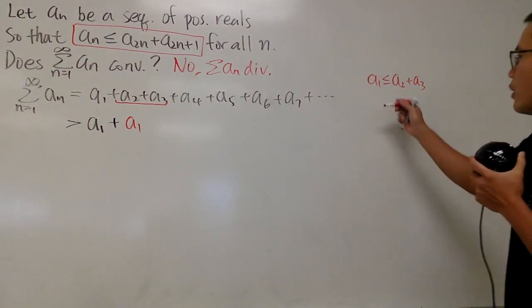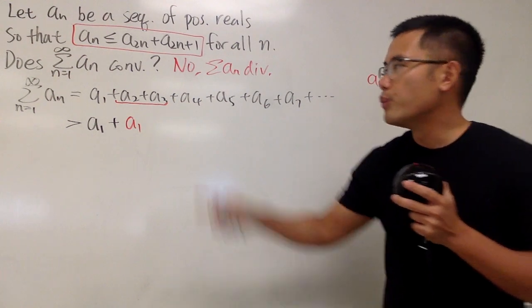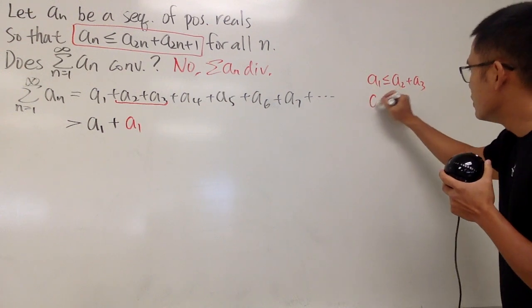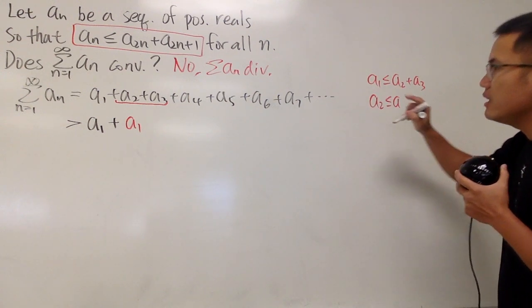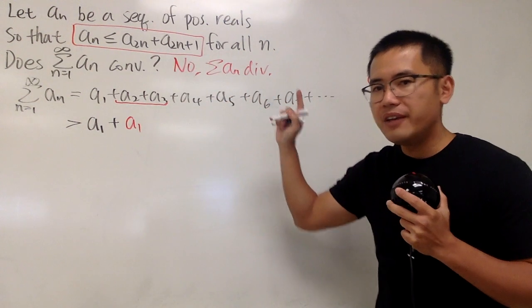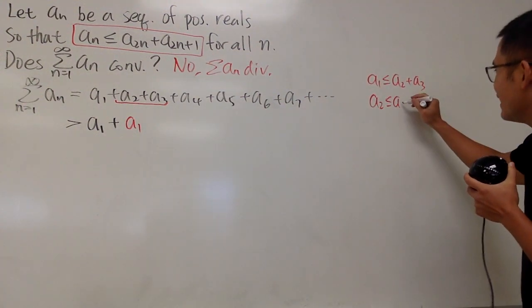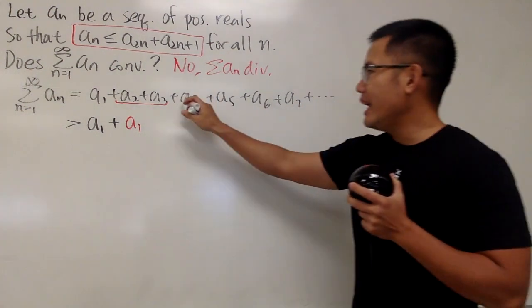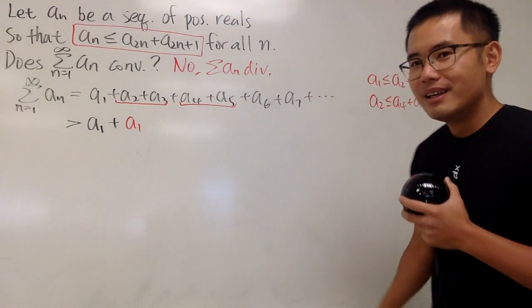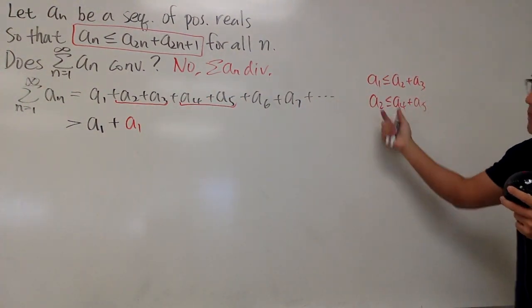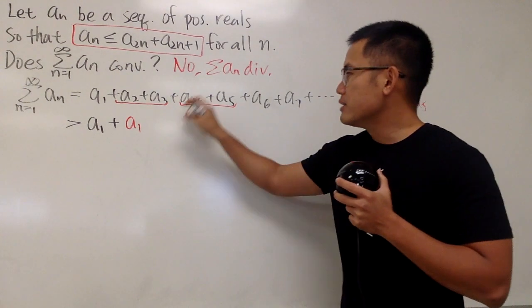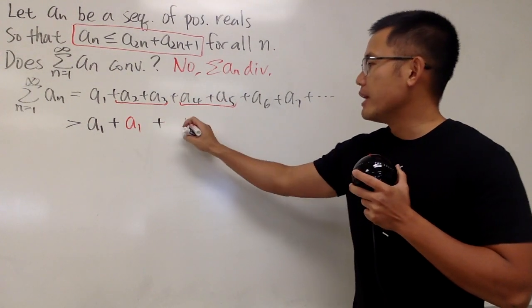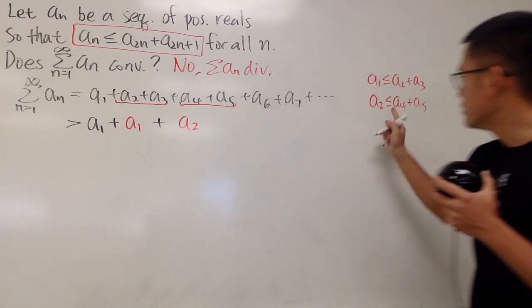And let's just write down a few more. So if n is equal to 2, we will have a2 is less than or equal to a4 and a5. So a4 plus a5. And of course, we see that a4 and a5, they are right here. So now we, again, look at it backward, but this time we have to write down. This right here is plus, they are bigger than a2. All right?